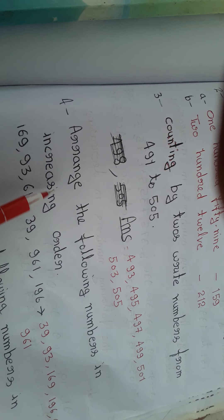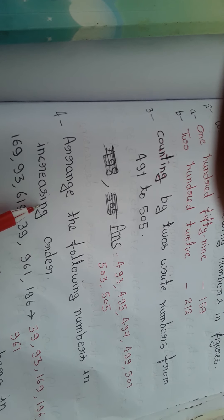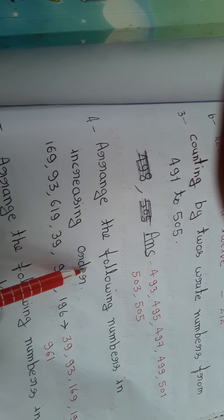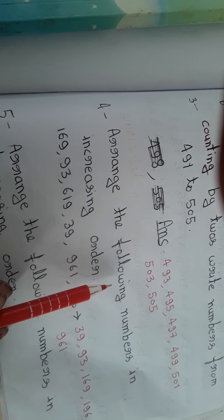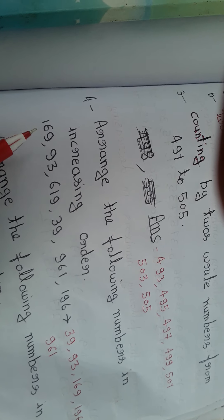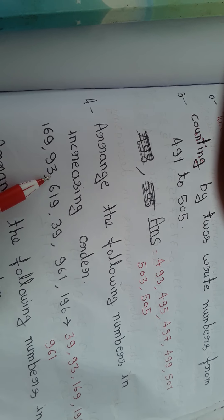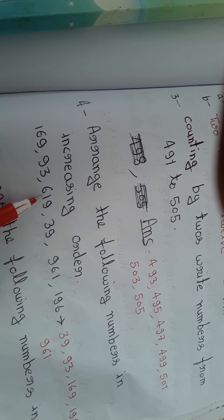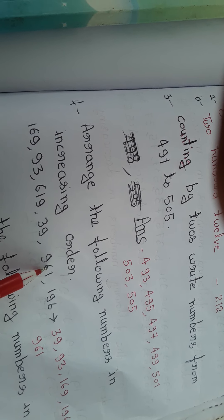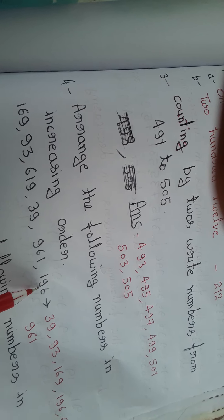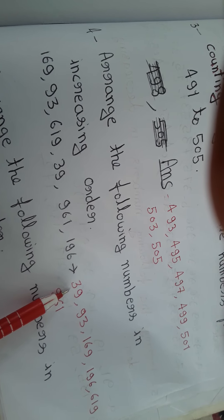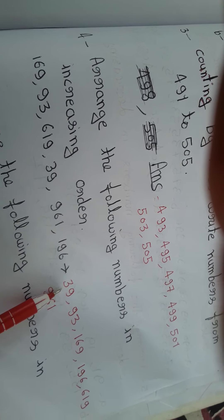Next question: arrange the following numbers in increasing order. Increasing order means ascending order — that is, from smallest to largest. The given numbers are: 169, 93, 619, 39, 961, 196.